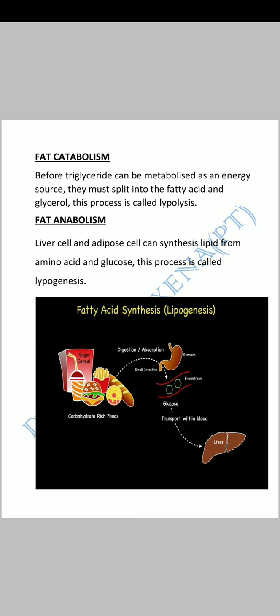If we talk about fat anabolism, liver cells and adipose cells can synthesize lipids from amino acids and glucose. This process is called lipogenesis. The root word 'lipo' means fat. So fat anabolism means liver cells and adipose cells produce lipids from amino acids and glucose, and this process is called lipogenesis.